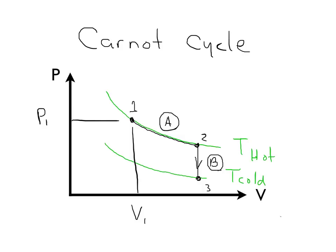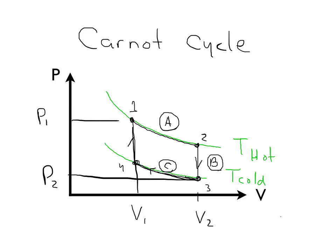Then we are going to proceed along T-cold and decrease our volume from V2 and P2 back to V1 and some other pressure — that's Point 4, and we're going to call this Part C. This is an isothermal path through our PV diagram where, instead of increasing our volume, we're decreasing it. The final step is going back to Point 1 with another isochoric process: keeping constant volume and increasing the pressure, going from cold temperature to hot temperature. We're going to call that Part D.